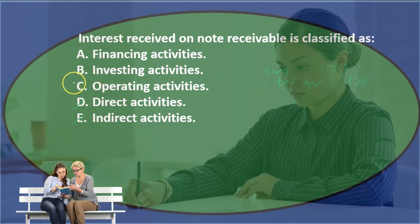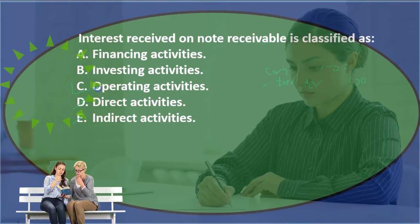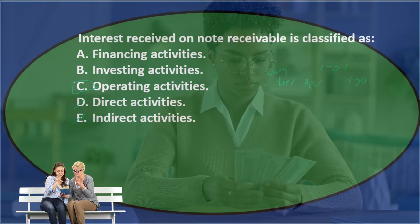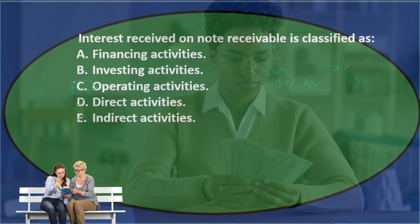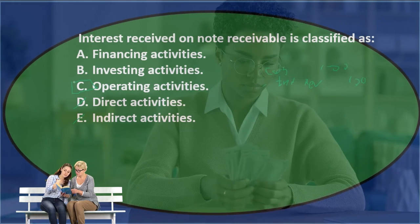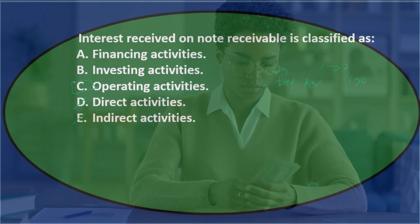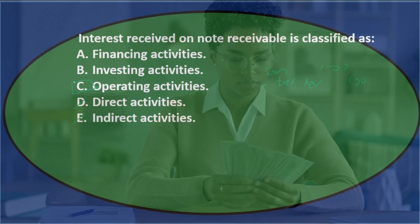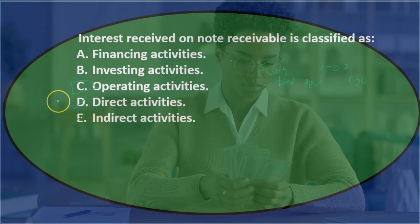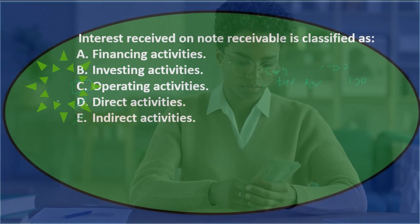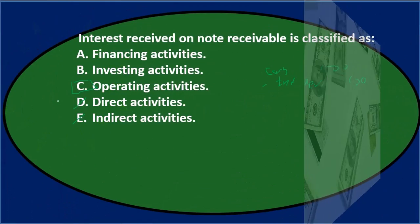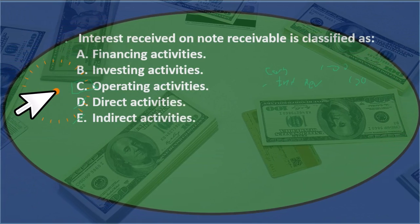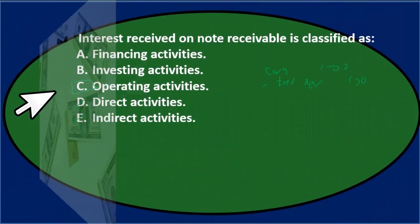Interest revenue is an income statement account, so it would typically fall under operating activities. This can be confusing because there is a note receivable involved, which might suggest investing or financing — but the interest received over time is the key item here. It's recognized on the income statement as part of normal operations, and therefore is recorded in operating activities on the statement of cash flows. Final answer: C, operating activities.